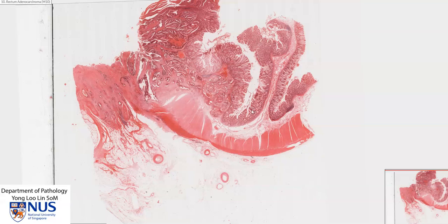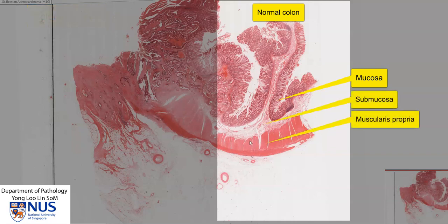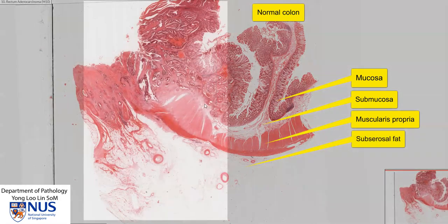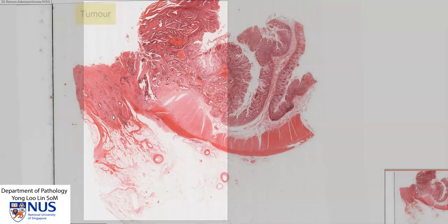This is a microscopic slide of a colon tumor. We can see the normal colonic mucosa, the submucosa, the muscularis propria with its two layers, and the subserosal fat. Starting from this highlighted point, this is where there is a tumor — an invasive tumor. The abnormal area invades all the way into the submucosa, through the muscularis propria, and even beyond into the subserosal tissue.